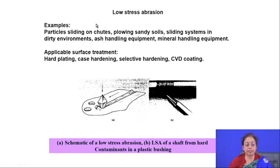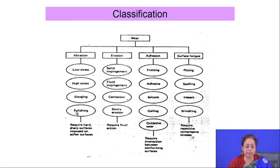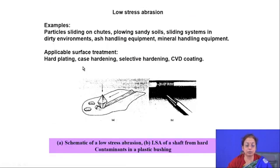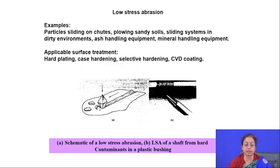Abrasive wear can be sub-categorized into four types: low stress abrasion, high stress abrasion, gouging wear, and polishing wear. In low stress abrasion, the applied stress is below the yield strength of the component. The threshold distinguishing low stress from high stress is the yield strength, which is material-dependent — it will be different for copper, steel, or magnesium.